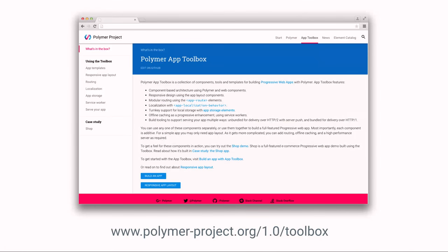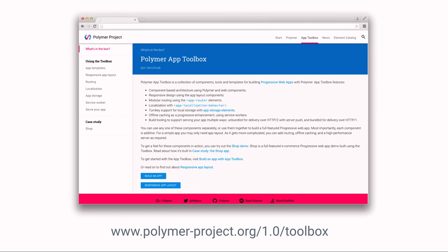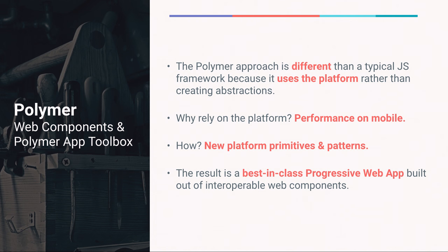You can check out this demo, as well as everything in the toolbox and documentation about all the things in the toolbox, at the brand new Polymer documentation site, www.polymerproject.org. In summary, the Polymer Project's approach to modern web development is different — it uses the platform, uses what's already there in users' browsers, rather than creating massive abstractions on top. Thanks to new, powerful web platform primitives, it is finally possible as web developers to create these engaging, immersive, app-like experiences on the mobile web. And the result is a first-class, progressive web app built out of interoperable web components.